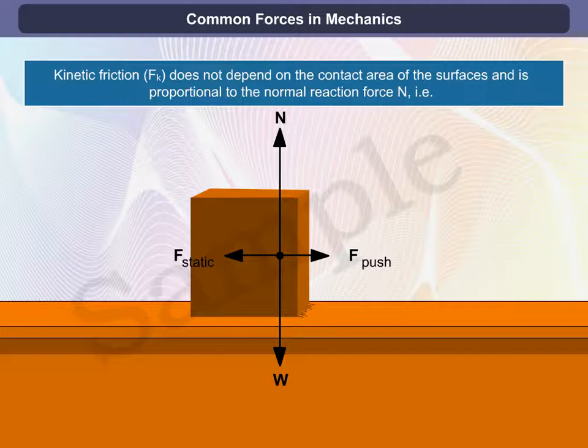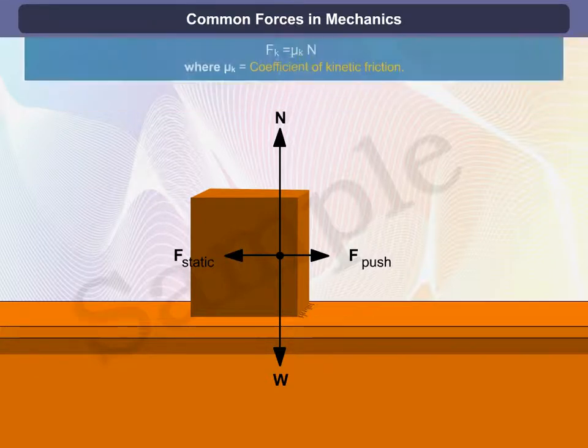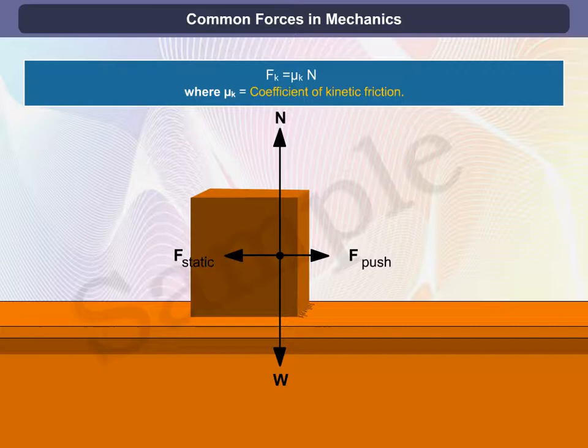Kinetic friction fk does not depend on the contact area of the surfaces and is proportional to the normal reaction force N. That is, fk equals μk times N, where μk is the coefficient of kinetic friction.